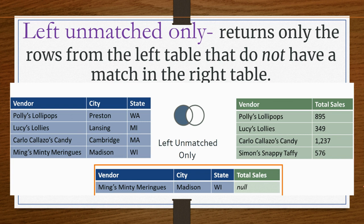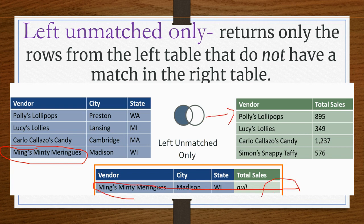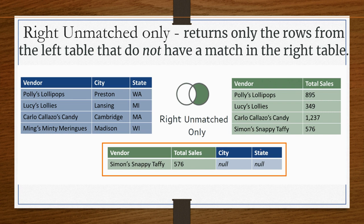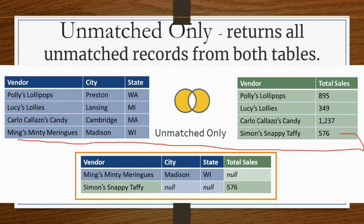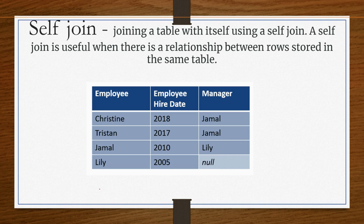In Tableau Prep Builder, there is also left unmatched only and right unmatched only. Left unmatched only returns only the rows from the left table that do not have a match in the right table — the reverse of left join. So only Mink's Minty, which is not in the right table, will be returned. Right unmatched only returns only the rows from the right table that do not match the left table, so Simon's Nappy Taffy will be returned. There is also unmatched in both tables — only records not matched in either table are displayed.